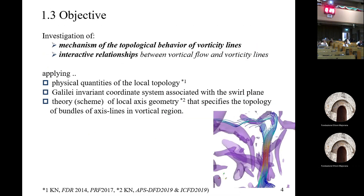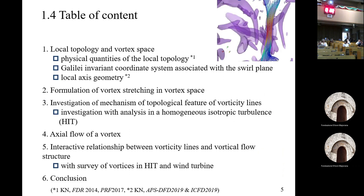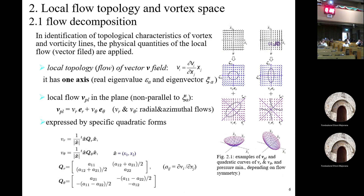The present objective is the investigation of the mechanism of the topological behavior of vorticity lines, and investigation of interactive relationships between vertical flow and vorticity lines, applying physical quantities of local topology, and introducing a Galilean invariant coordinate system associated with the swirl plane and local axis geometry that specifies the topology of the axis line in the vortical regions. First, we introduce topological quantities and define a Galilean invariant coordinate system associated with vortical regions.